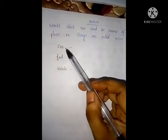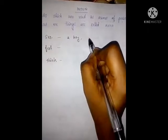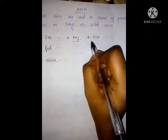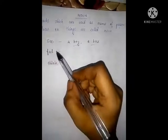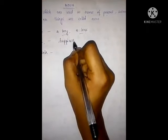All we can see, we can feel, or think are also noun. What are the nouns that we can see? A boy — we can see a boy. A bus — these are also noun. What type of things we can feel? We feel happiness, we can feel pain. So happiness and pain are also noun.